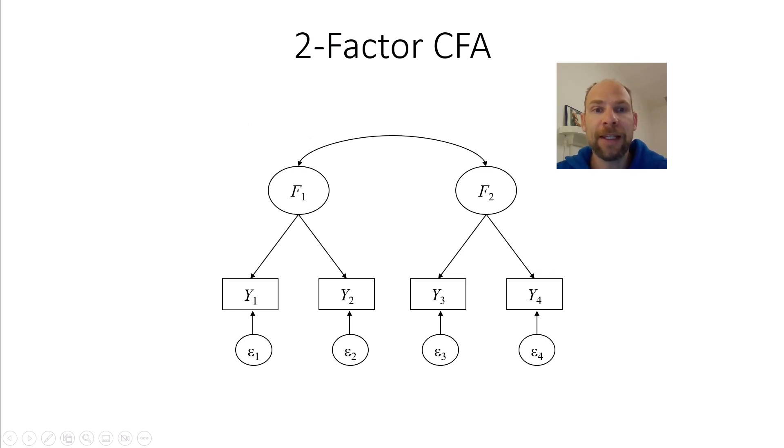I want to start with a simple model, a two-factor CFA model that allows us to see the issues pretty clearly with the indicator question. So here you can see on the slide we have a two-factor CFA model with correlated factors. Each factor has two indicators and the epsilon variables at the bottom indicate measurement error.